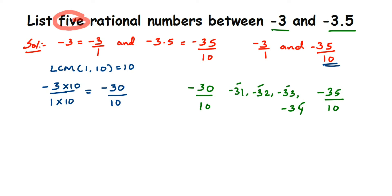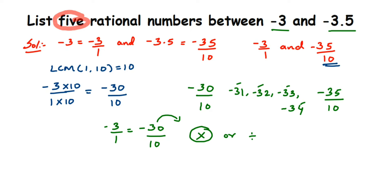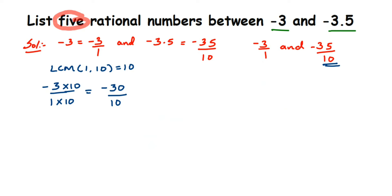We're going to find another equivalent rational number for both minus 30 by 10 and minus 35 by 10. You can find equivalent rational numbers by multiplying or dividing — multiplying is preferable here. We'll multiply both numerator and denominator by 2. For minus 30 by 10, multiplying by 2 gives minus 60 by 20.